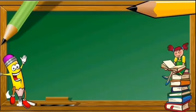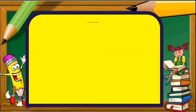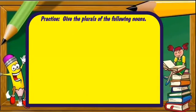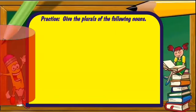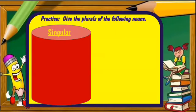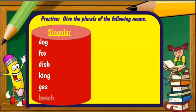So let's move on to short practice. Now we're going to give the plural of the following nouns. We have our singular nouns: one dog, one fox, one dish, one king, one gas, and one beach. Singular meaning one.